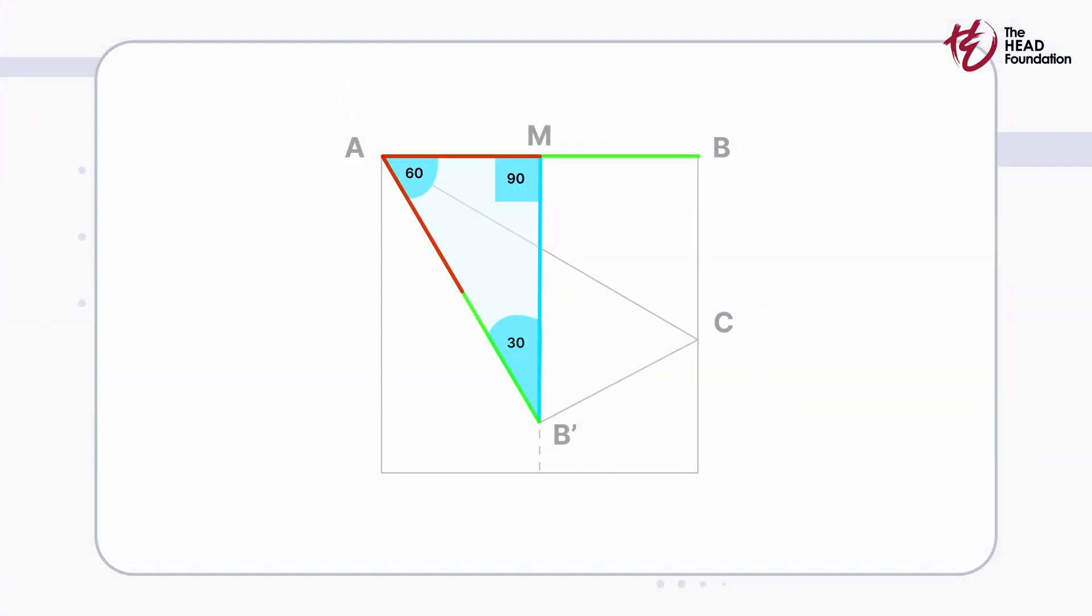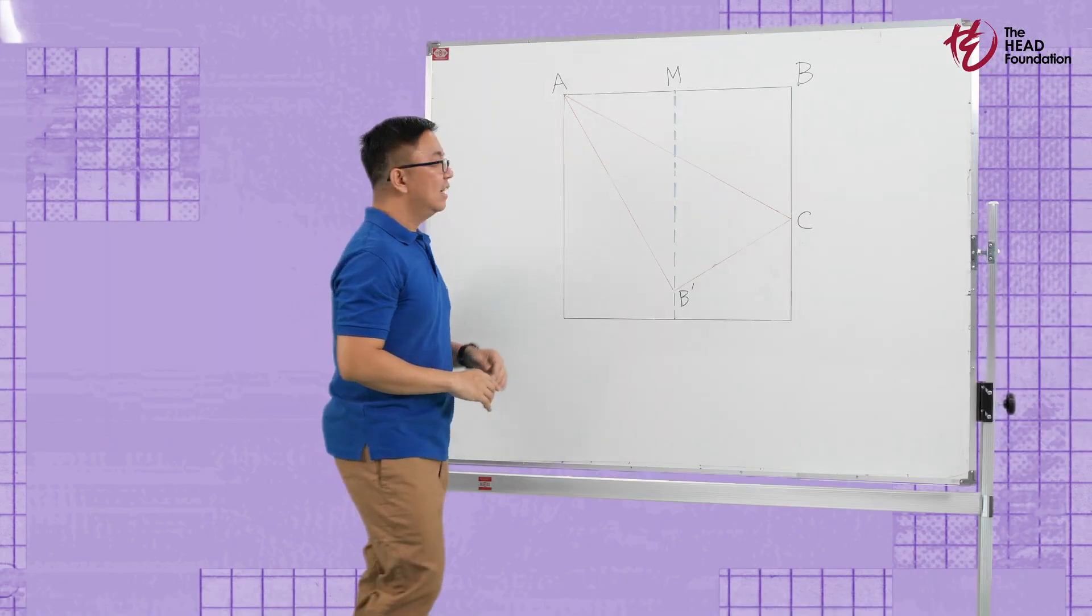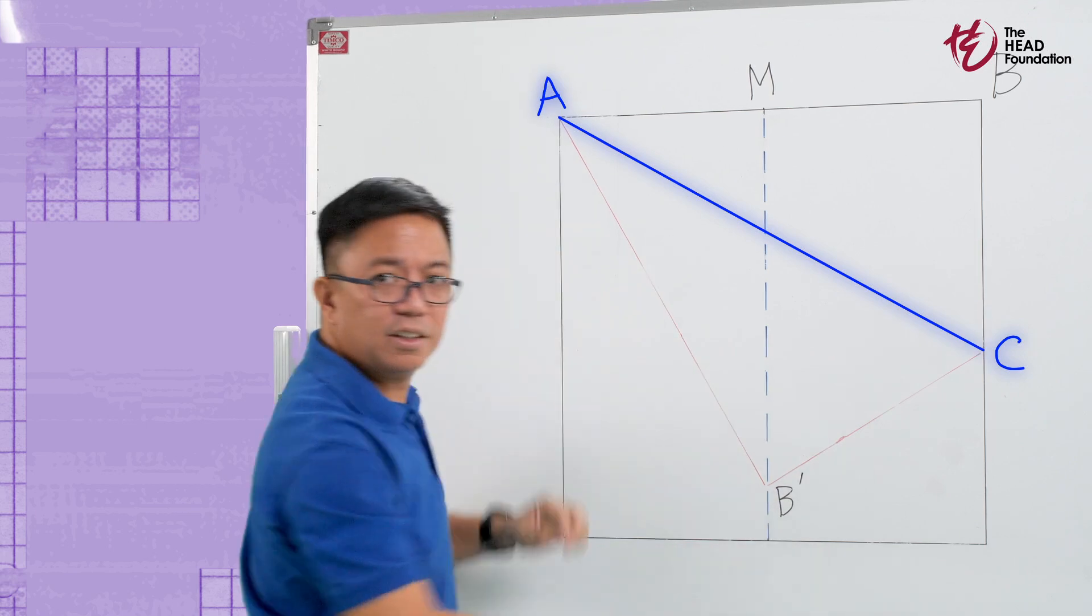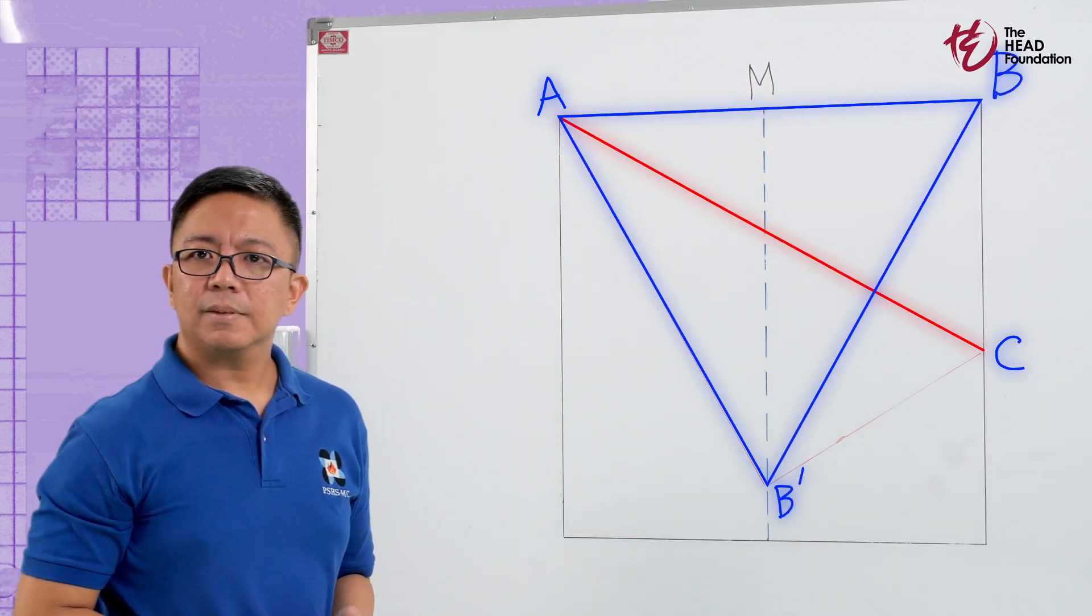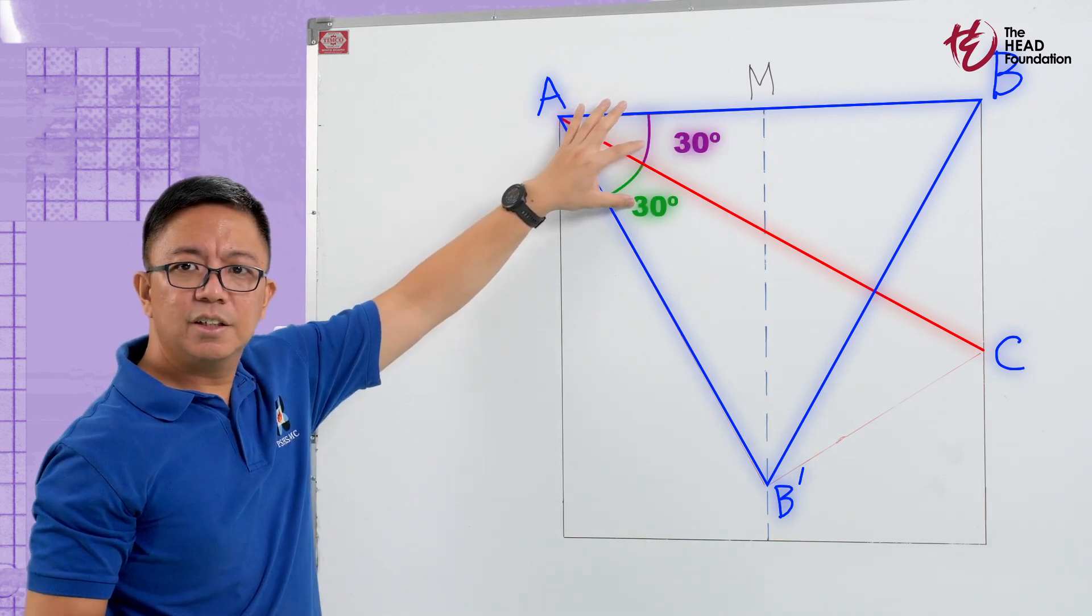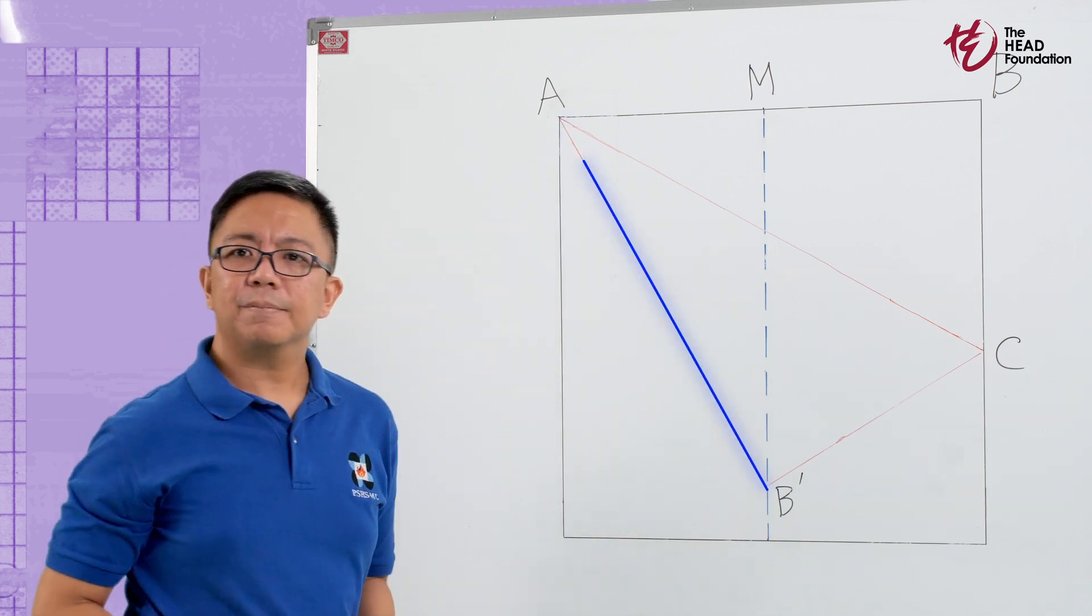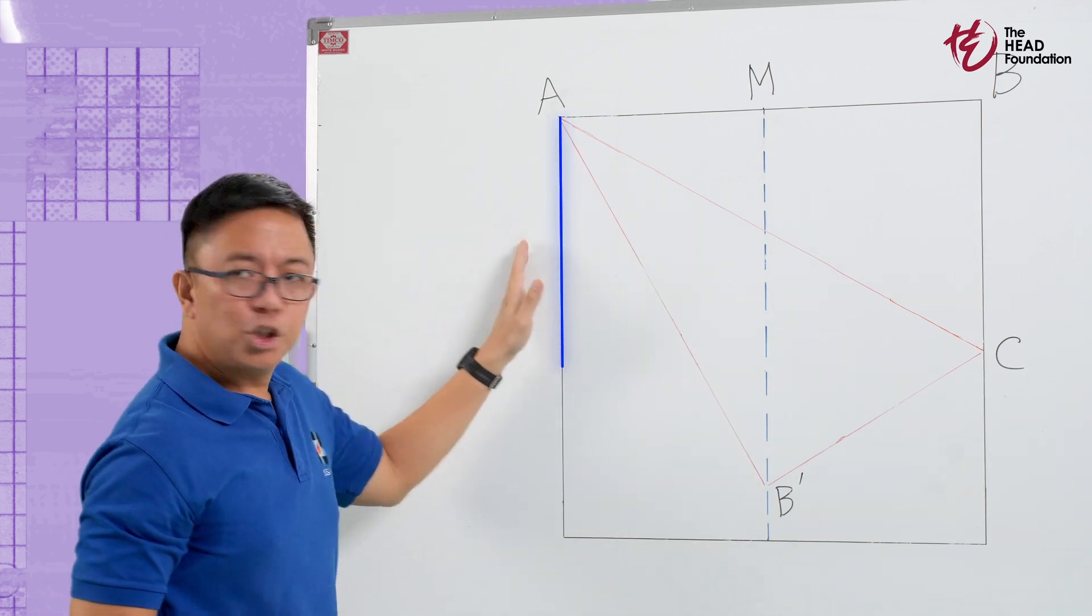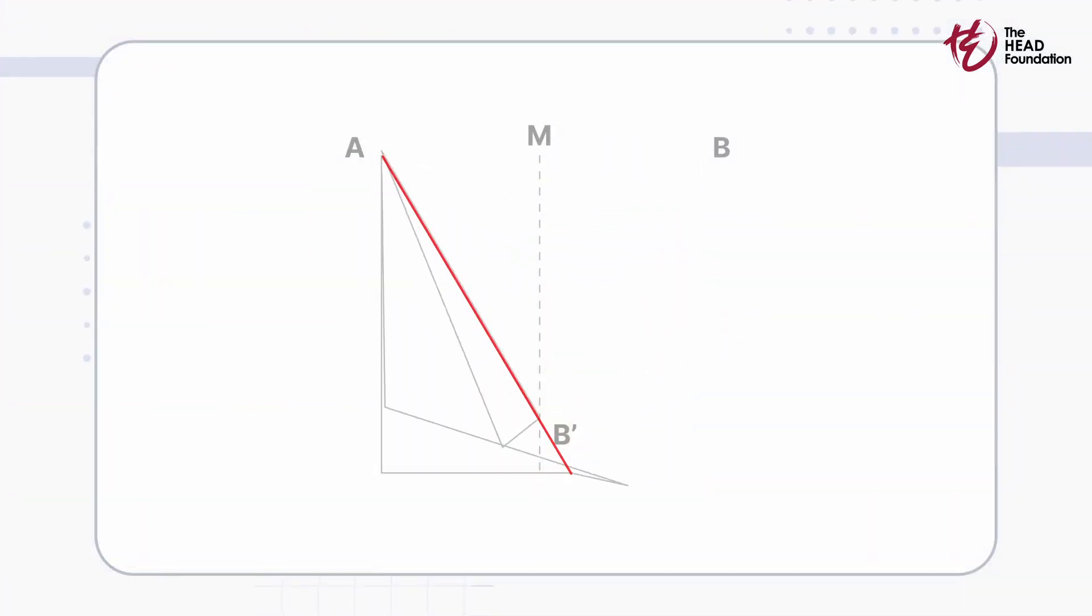Keep in mind, this triangle we're talking about is just in the illustration, not on your paper. Now for the grand finale, line AC here bisects angle BAB', slicing it into 30 degrees. Double check this by folding along line AB'. The left edge should align with line AC, proving we've perfectly trisected the 90 degree angle.